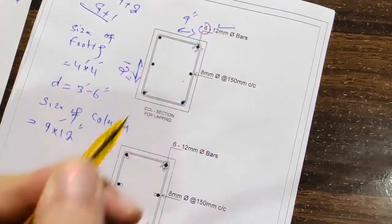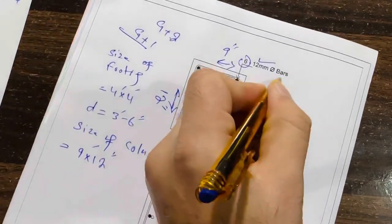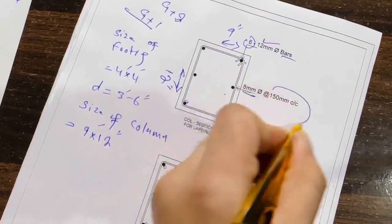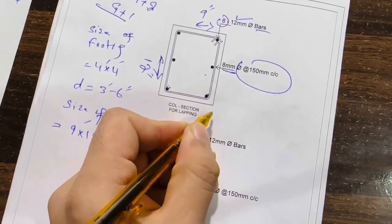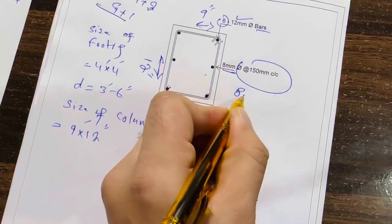We have six numbers of steel rods, diameter is 12mm bar. The stirrup diameter is 8mm with spacing of 150mm center to center, or you can say 8mm with spacing of 6 inches center to center.